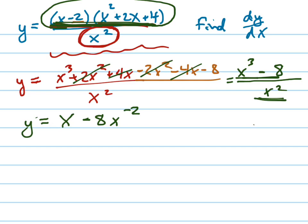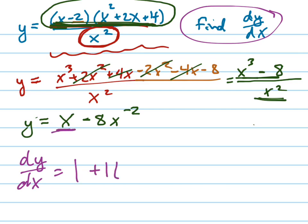That's much easier to find the derivative for. So now let's find the derivative. dy/dx equals 1, that's the derivative of x, plus 16x to the negative 3rd. And there's your answer.